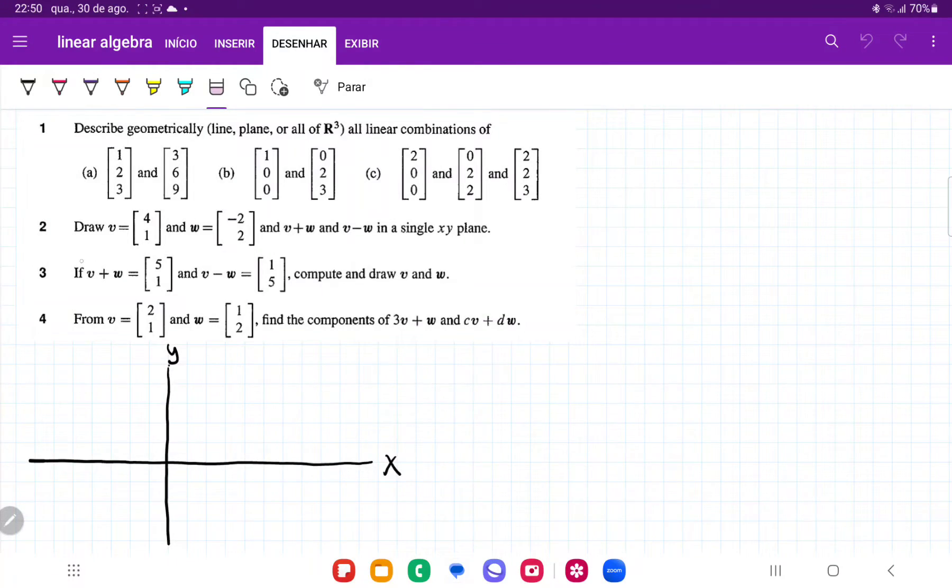So for number 3, we have that if v plus w is equal to 5 and 1, and v minus w is equal to 1, 5, they want us to compute and draw v and w.